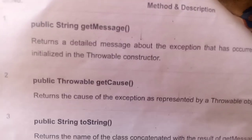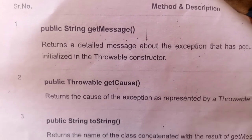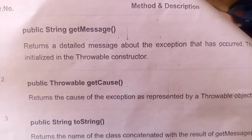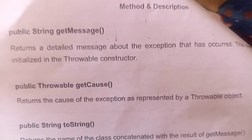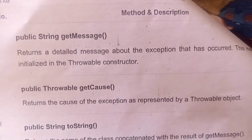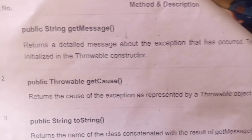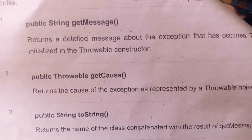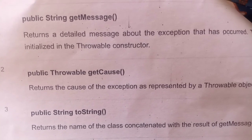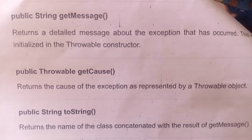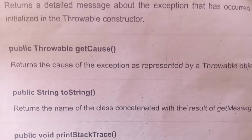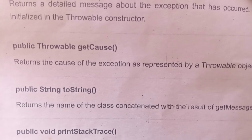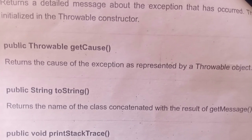Method and description. Public String getMessage() — returns a detailed message about the exception that has occurred. This method is initialized in the Throwable constructor. Public Throwable getCause() — returns the cause of the exception as represented by the Throwable object. Public String toString() — returns the name of the class concatenated with the result of getMessage().